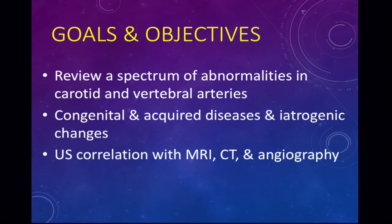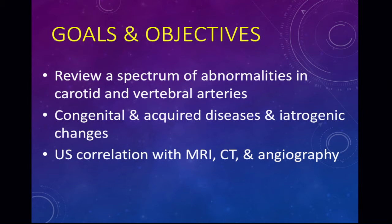The goals and objectives of this talk include reviewing a spectrum of abnormalities in the carotid and vertebral arteries, including congenital and acquired diseases and iatrogenic changes. We're also going to be correlating ultrasound with MRI, CT, and angiography whenever possible.